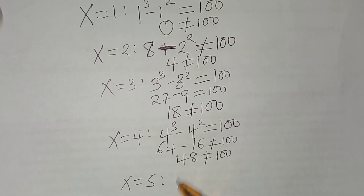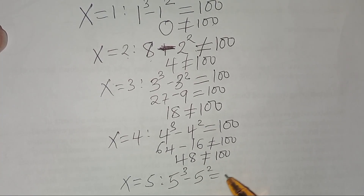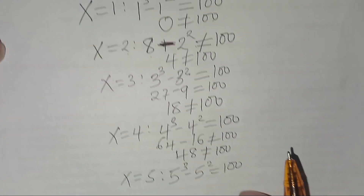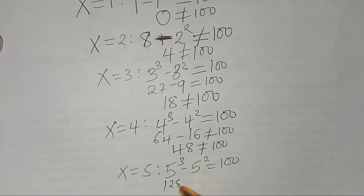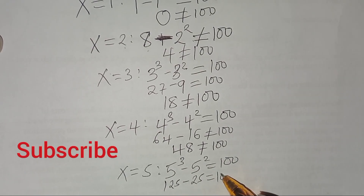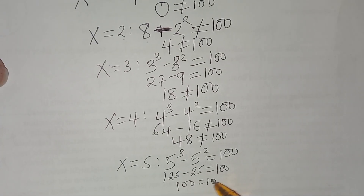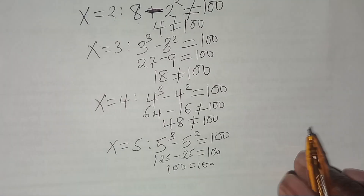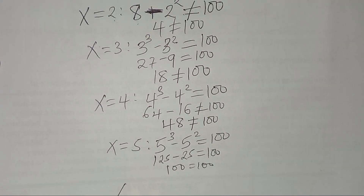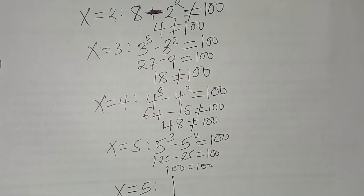Now let's check x equal to 5. Here we'll have 5 cubed, subtract 5 squared, and check if this equals 100. So 5 cubed is 125, subtract 5 squared which is 25, and this equals 100. So 100 equals 100 — that means x equal to 5 satisfies the equation, so one solution is x equal to 5.